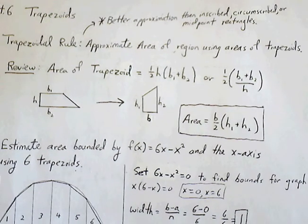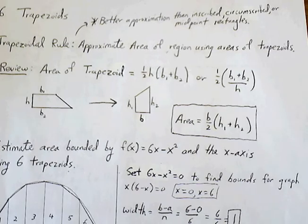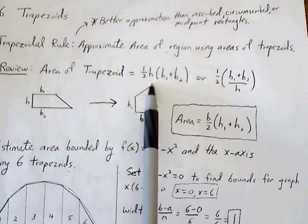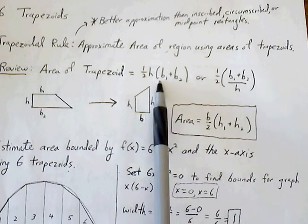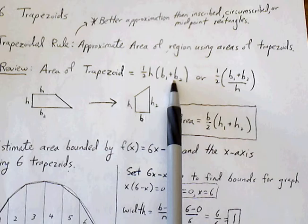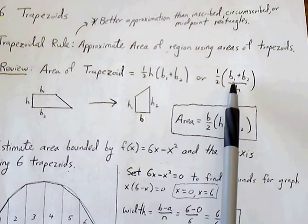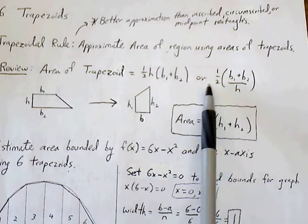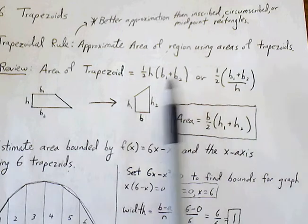So to review, the area formula for a trapezoid is one-half height times b sub 1 plus b sub 2, or one-half of b sub 1 plus b sub 2 over h. So either way you want to write it.